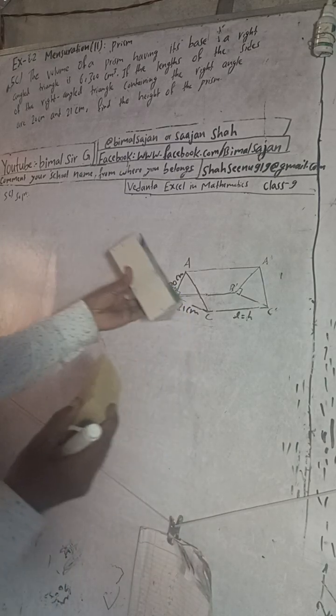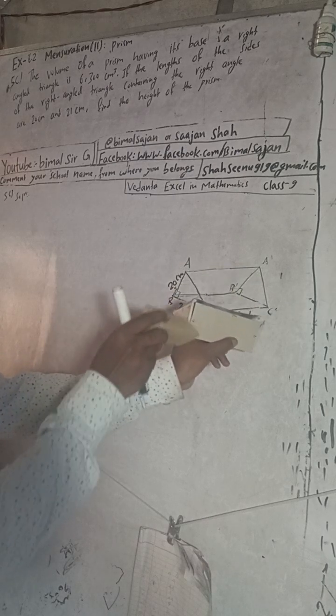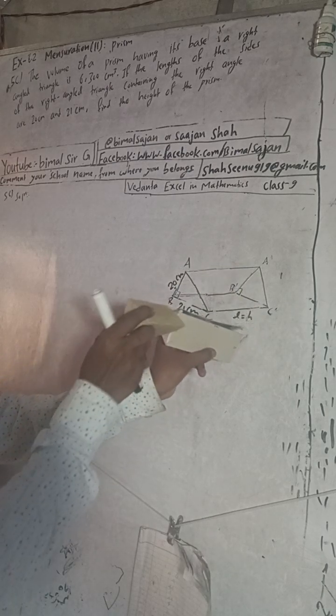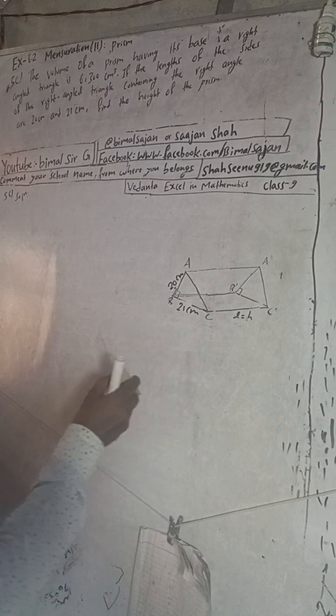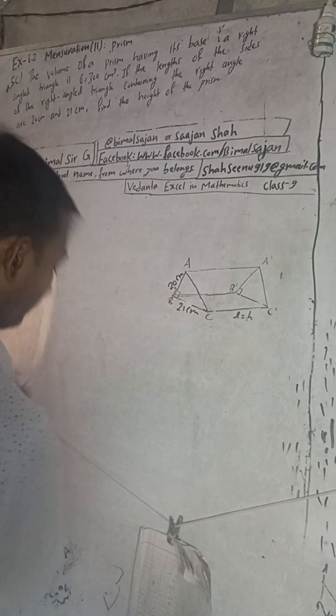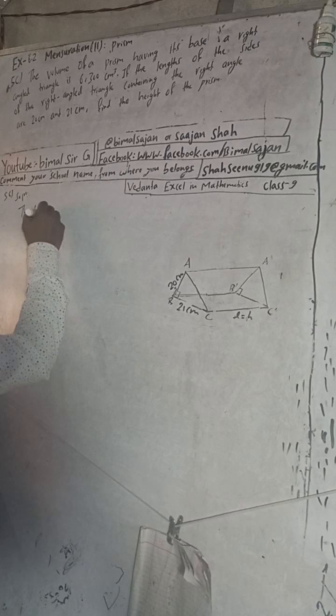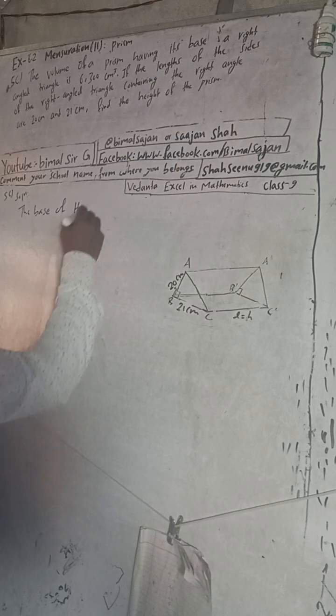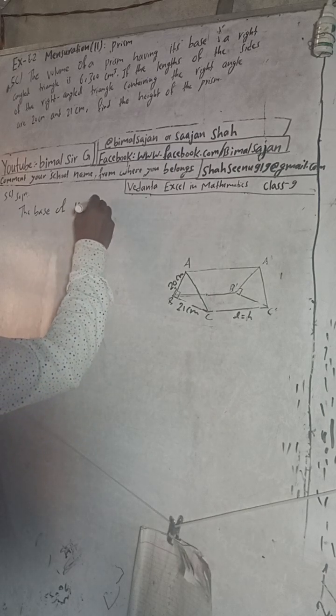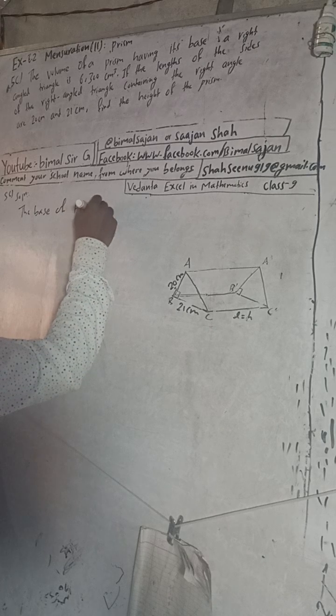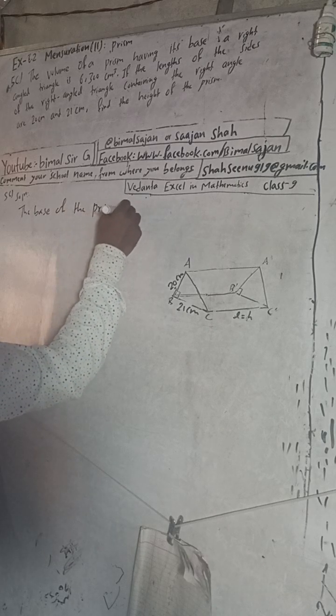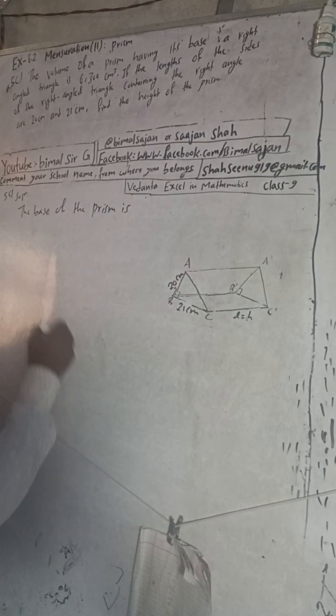So you can see in my hand, this is the prism, this shape. It's not equilateral, but like this - right angle, right angle base. Now right here, the base of the prism is right angle triangle.